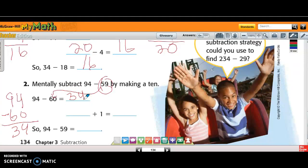And if I subtracted, if I added... wait a minute. And then I'm going to add 1. So 34 plus 1 is 35. Yeah, that's right. So 94 minus 59 is 35.